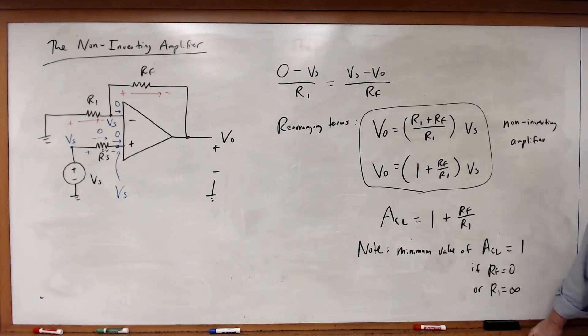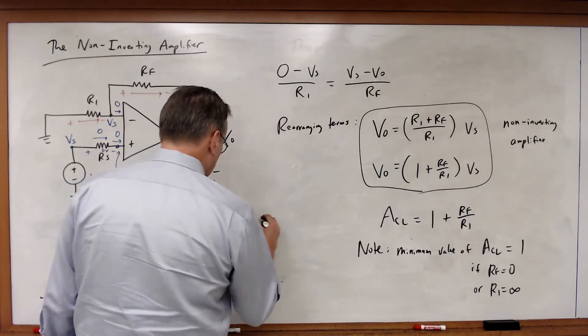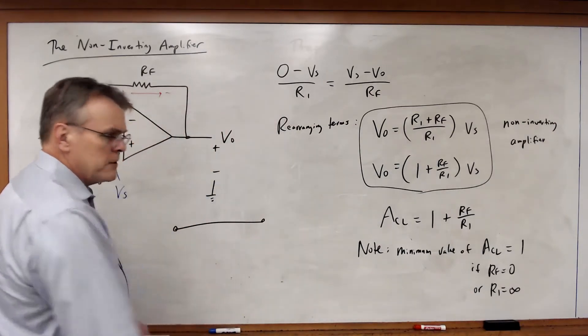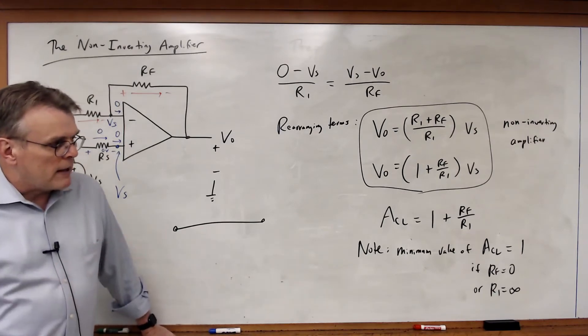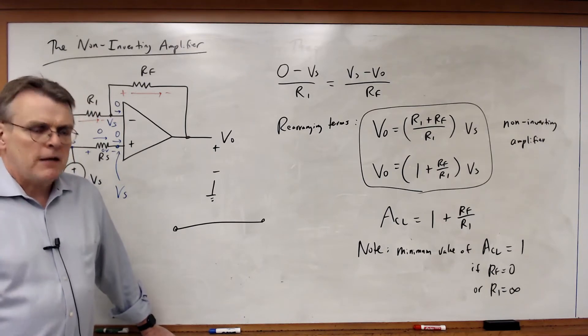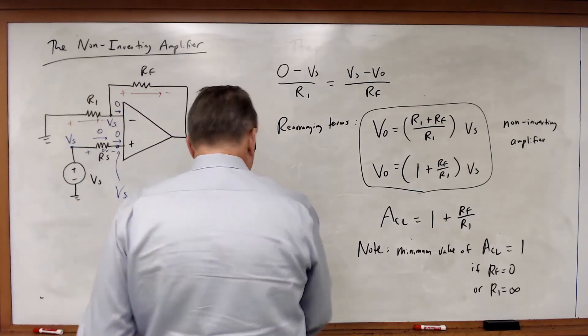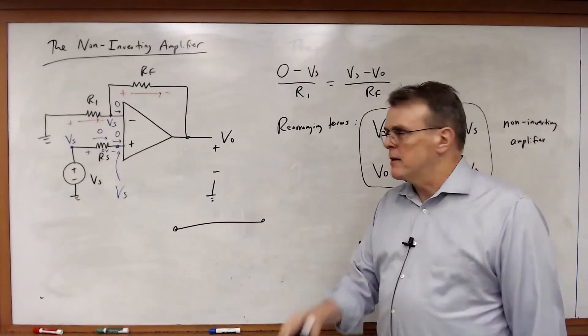Closed loop gain of 1. What does that mean? Well, you might think to yourself, the gain of 1 means it's the same voltage, right? Why not just use a piece of wire? Well, it turns out actually if we want to do a closed loop gain of 1, there's actually a very useful application of that. Let me go through and let's look at how we can apply an op-amp that does that.